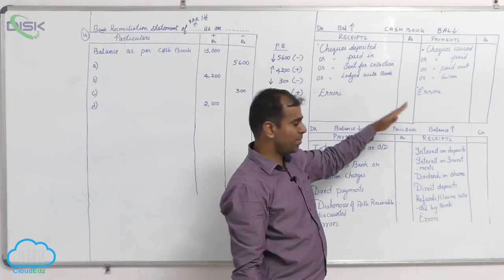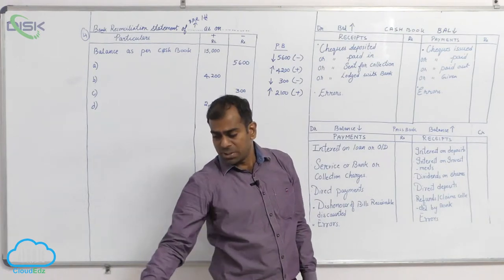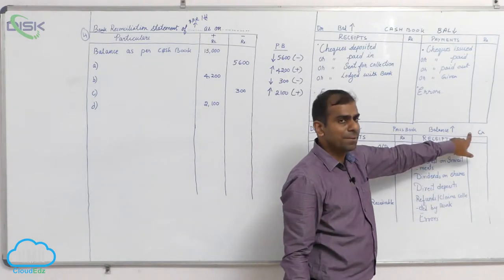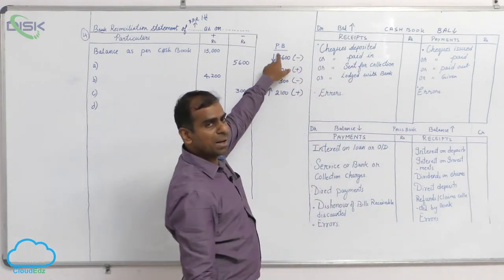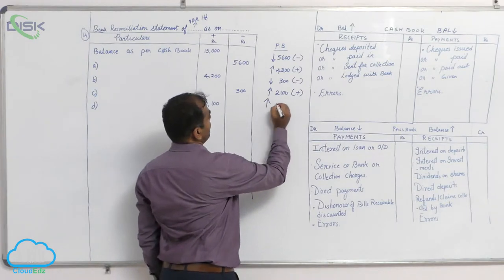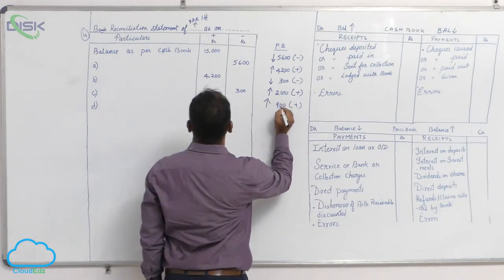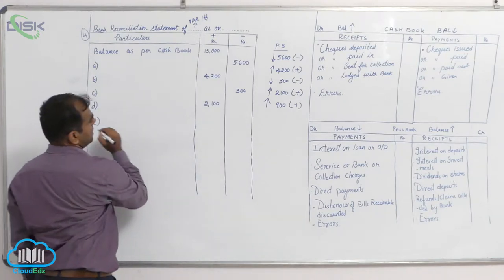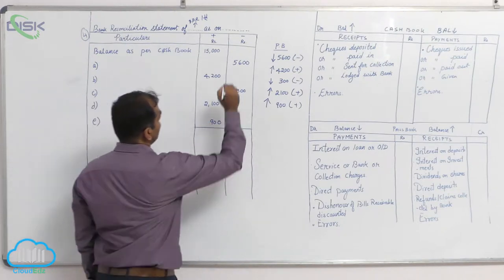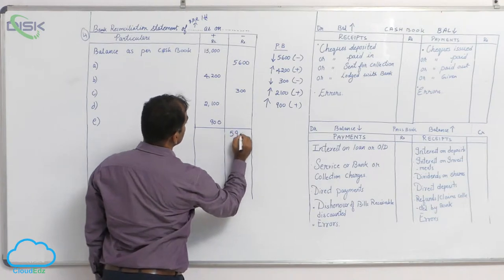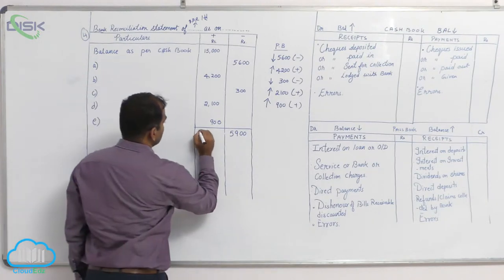You did not do anything here; we assume the bank will enter the amount correctly on the credit side of the passbook. So the bank would have entered 900 on the credit side of the passbook, and as a result the passbook balance is increasing. Write the transaction as it is and write the amount 900 in the addition column. The minus column total comes to 5900 and the plus column total comes to 22200.